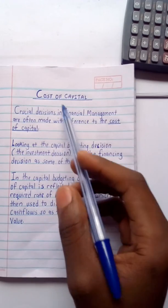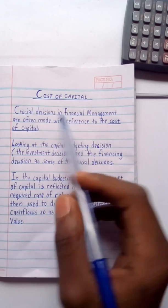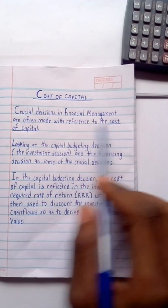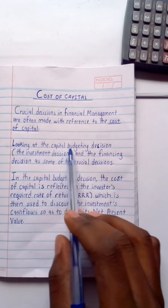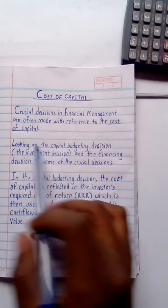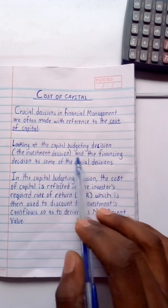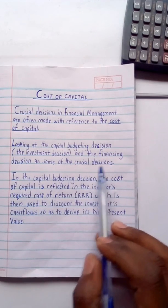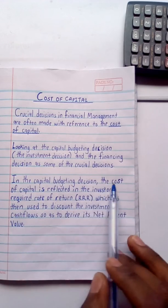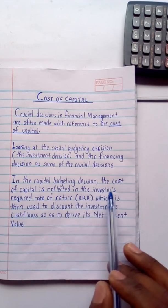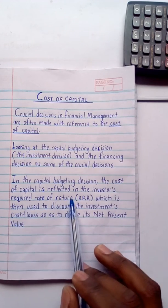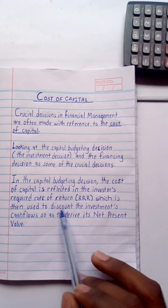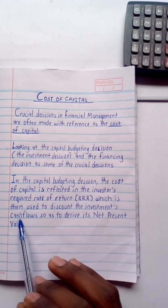Here in cost of capital, crucial decisions in financial management are often made with reference to the cost of capital. Looking at the capital budgeting decision, that is the investment decision and financing decisions, as some of the crucial decisions. In the capital budgeting decision, the cost of capital is reflected in the investor's required rate of return (RRR), which is then used to discount the investor's cash flows so as to derive its net present value.